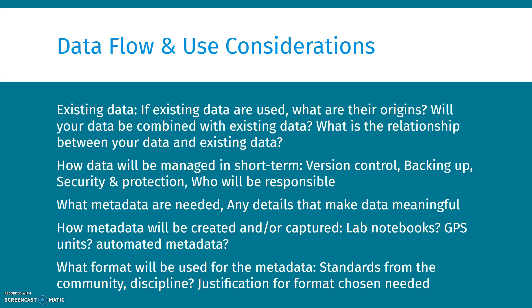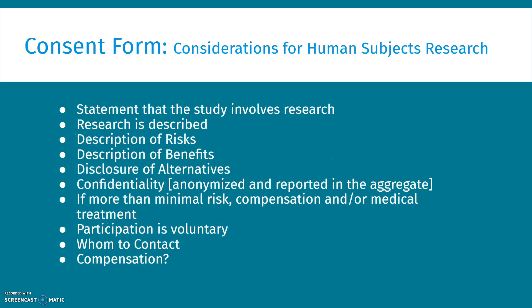These are all just questions to consider as you're discussing the data flow and use within a project. I'm often asked about human subjects related research and considerations specific to that. A consent form for a collection of human subjects research that you plan to have be open must include that in the consent form. An informed consent typically in the U.S. includes a statement of the study, what the research is about, the description of the risks, the description of the benefits, the disclosure of alternatives, a confidentiality statement typically because the data are anonymized and reported in the aggregate. If more than minimal risk, there typically needs to be some compensation or medical treatment if a risky procedure is involved in the human subjects research.